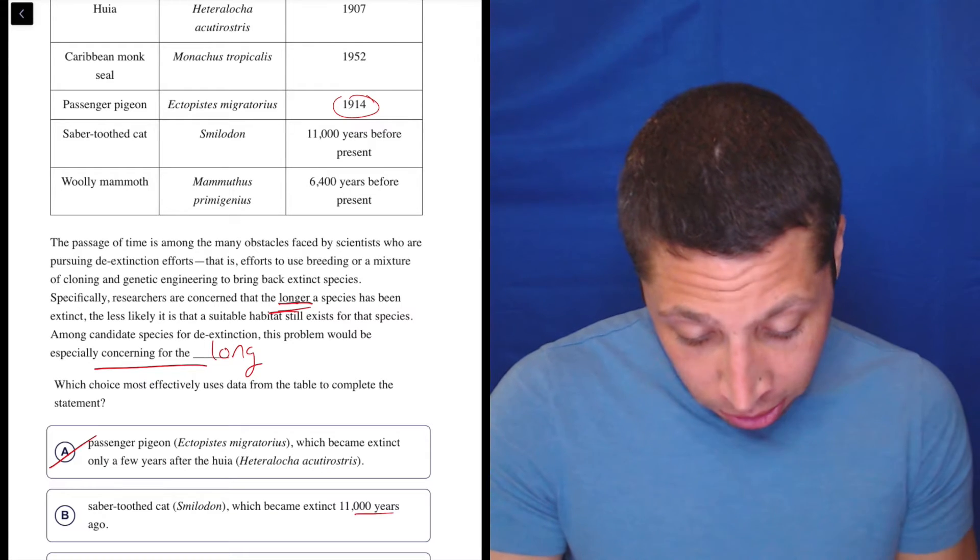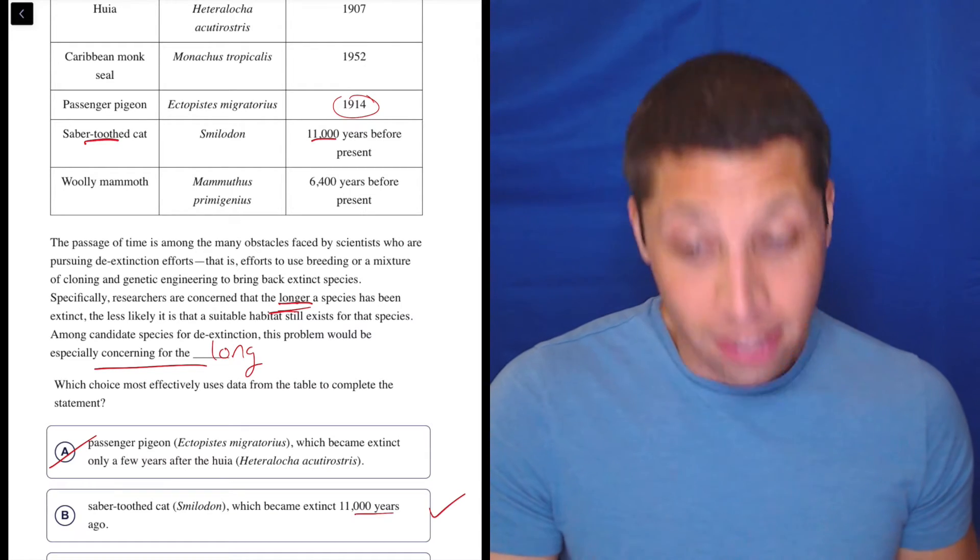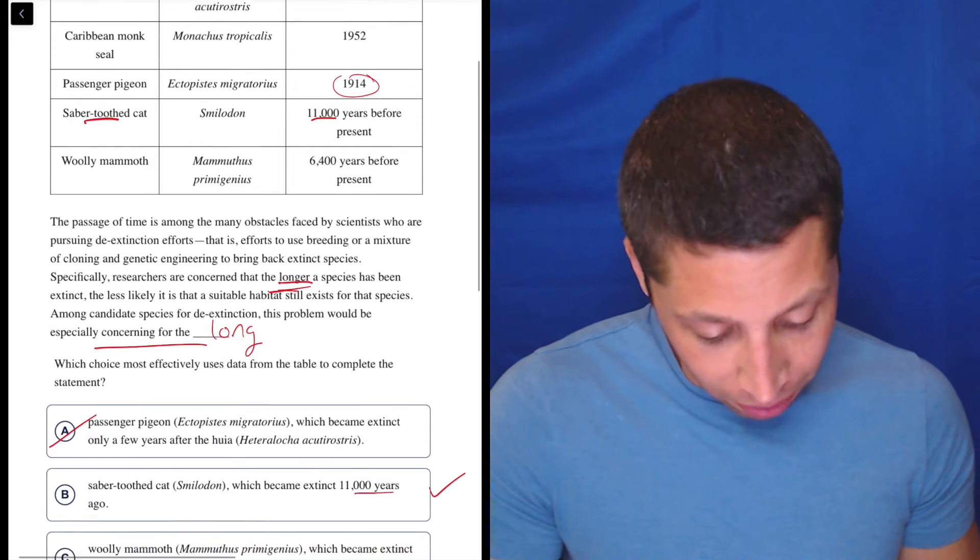Saber-toothed cat, 11,000 years - yep, seems good. Let's move on though, we got to check everything.